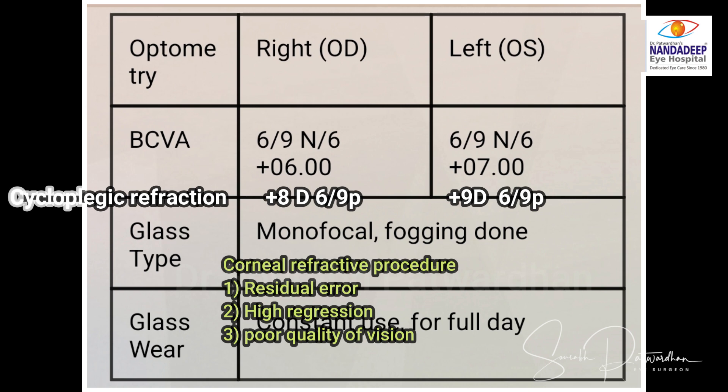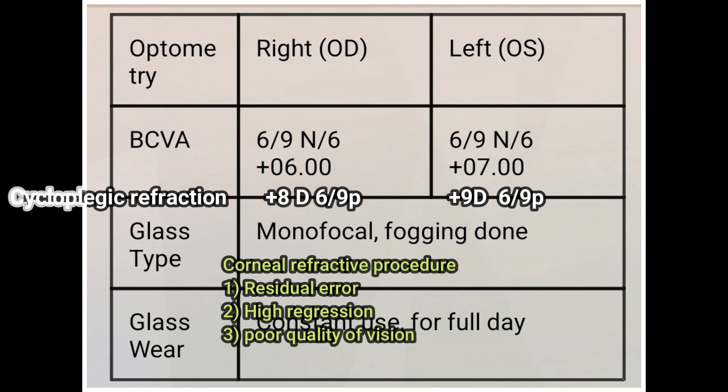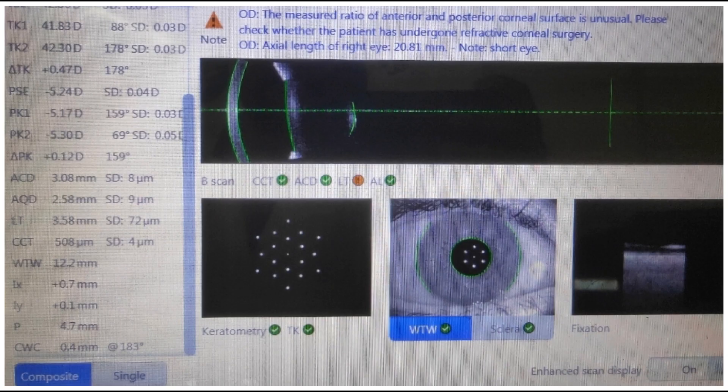If I consider a corneal refractive procedure and the cornea is okay, there is a high chance of residual error because most machines do not allow such high refractive error correction. Also there is higher regression and poor quality of vision because you are steepening the cornea, and there may always be a slightly decentered ablation.